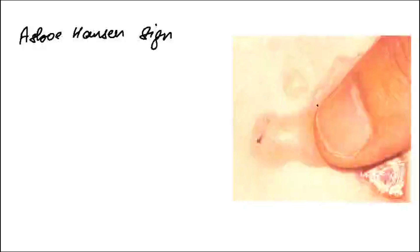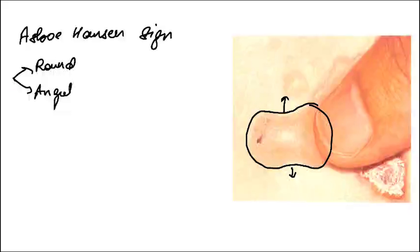There is a blister. First, we mark the end of the blister, and then pressure is put on the top of the blister. We see the extension of the blister. Based on if the extension is round or angular, we have different diagnoses. If the extension is round, the diagnosis is bullous pemphigoid, dermatitis herpetiformis, epidermolysis bullosa dystrophica, or epidermolysis bullosa acquisita.